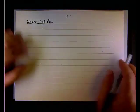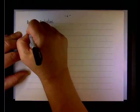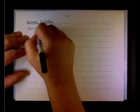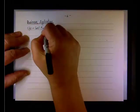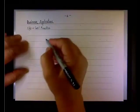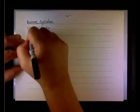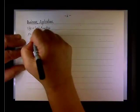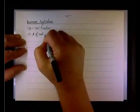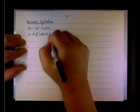In business applications, let's cover a few preliminary concepts. C(x) is the cost function, where x is the number of units to be produced or sold. So x equals the number of units to produce or sell.